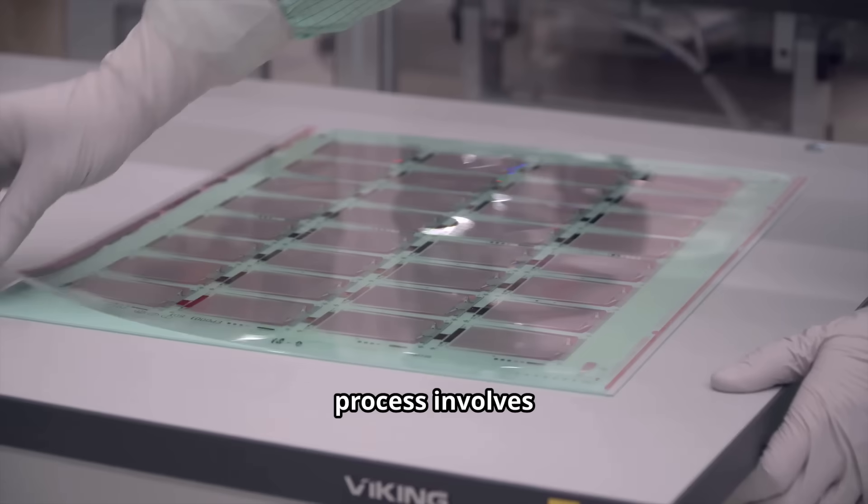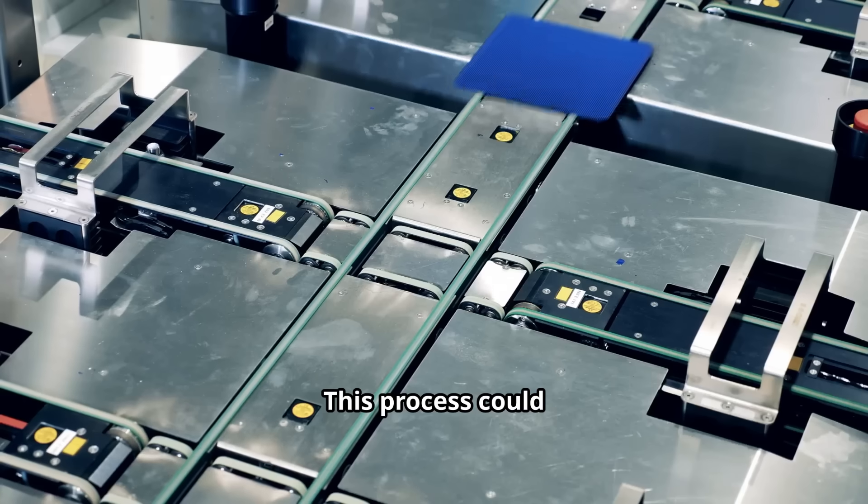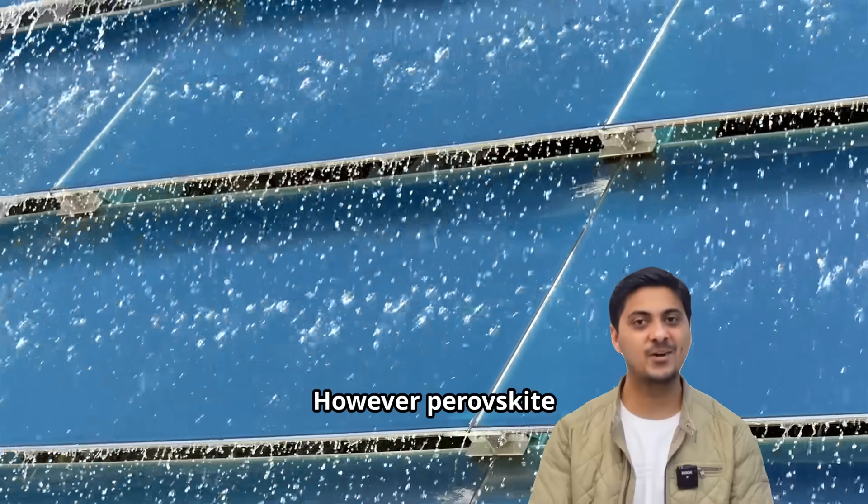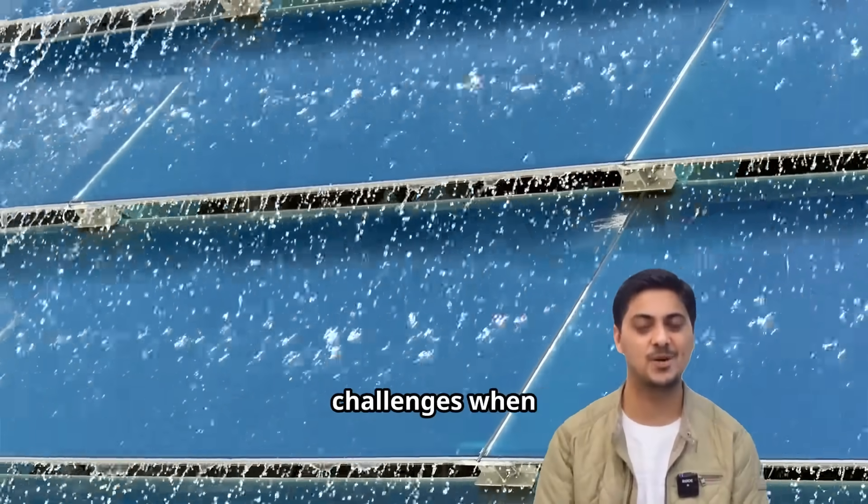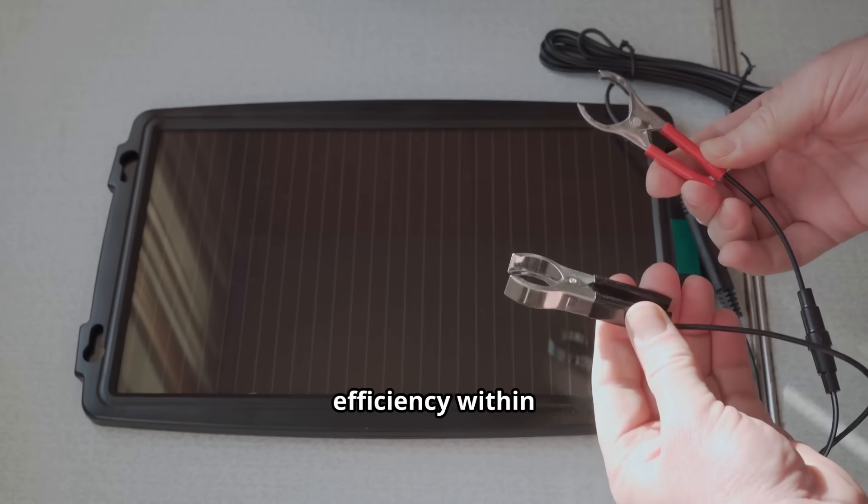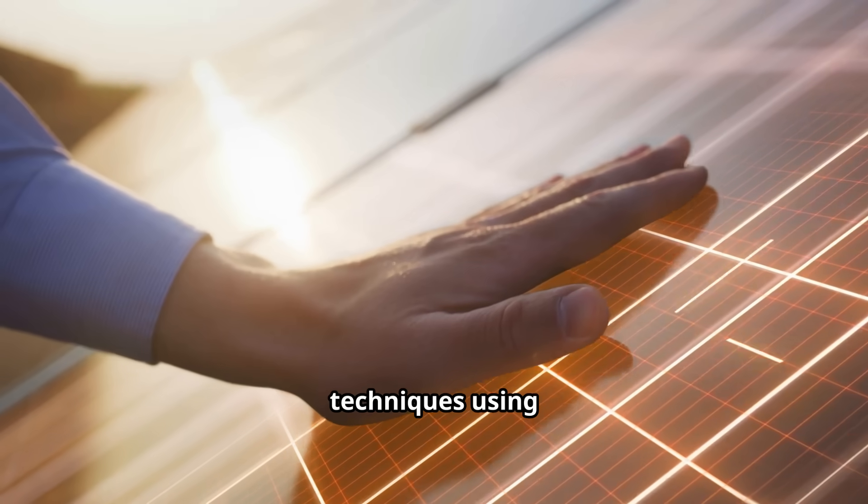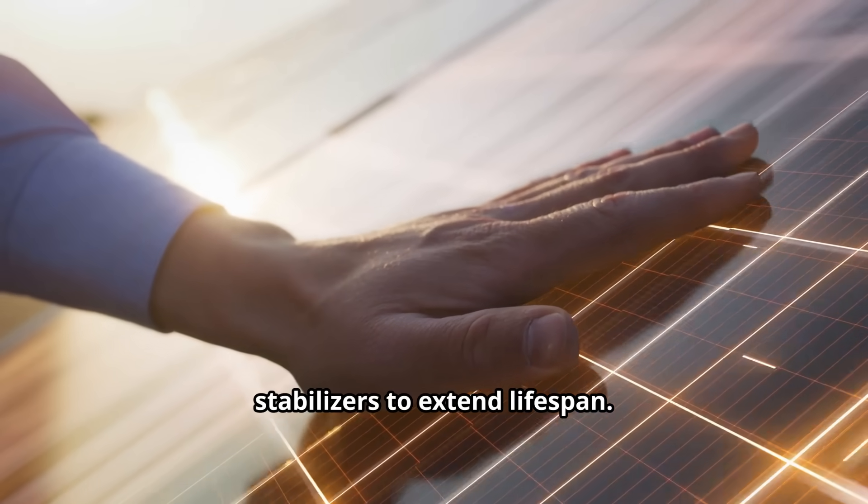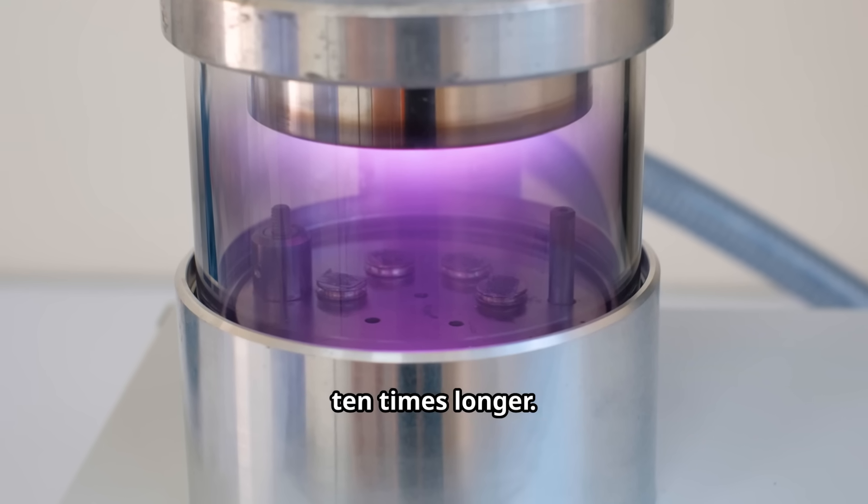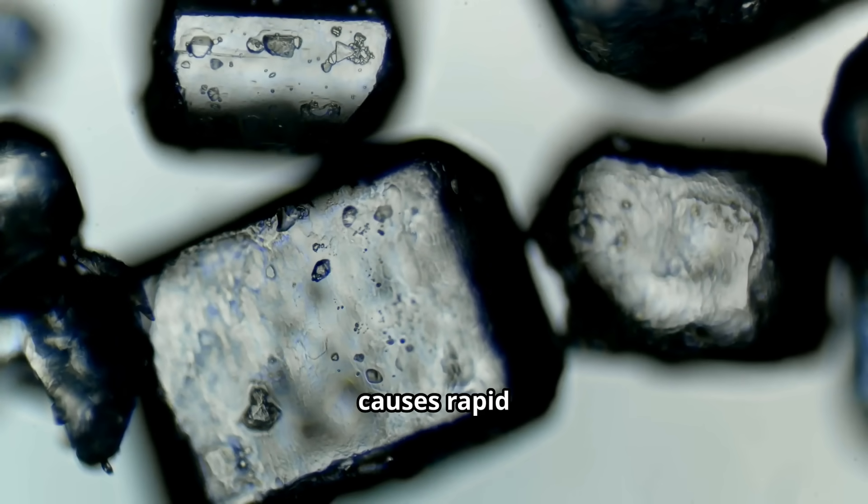The manufacturing process involves coating perovskite solution directly onto silicon wafers using simple printing techniques. This process could potentially reduce manufacturing costs to 35 cents per watt. However, perovskite materials face significant stability challenges when exposed to moisture, heat, and oxygen. Traditional perovskite cells degrade rapidly, losing efficiency within months rather than decades like silicon. Researchers have developed advanced encapsulation techniques using protective barriers and chemical stabilizers to extend lifespan. Scientists discovered that adding alumina nanoparticles can make perovskite cells last 10 times longer. These tiny particles trap iodine, preventing the material degradation that causes rapid efficiency loss.